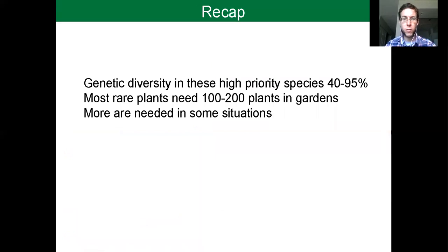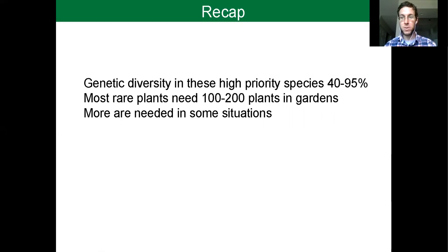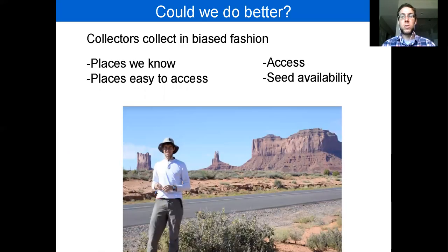To recap: the genetic diversity conserved in the 11 taxa we've looked at ranges from 40 to 95%. These species have had a lot of work done on them, so we expect this to be an optimistic situation — most plant species in botanic gardens are probably lower. Most plant species probably need about a couple hundred plants across the botanic garden community to conserve their genetic diversity, and in some situations we'll have to increase that amount. We do have a lot of work to do as botanic gardens.